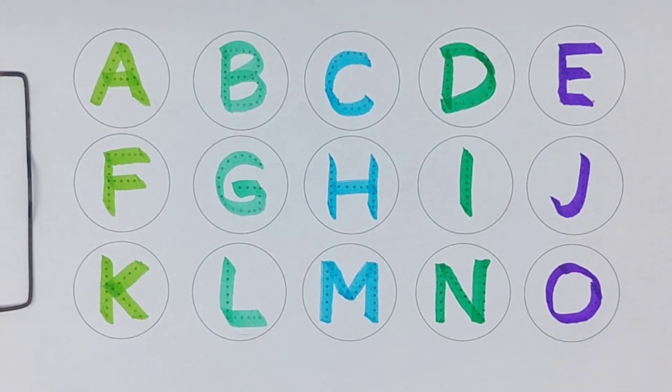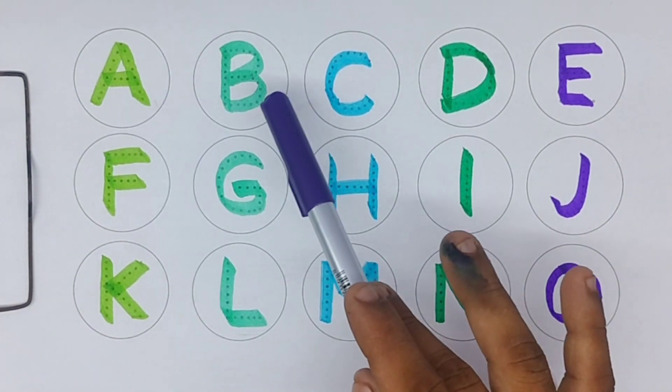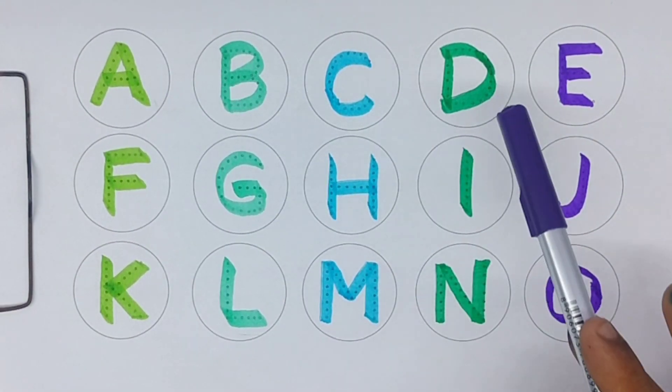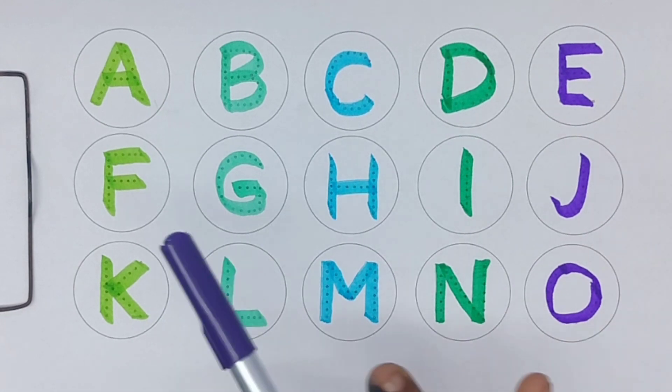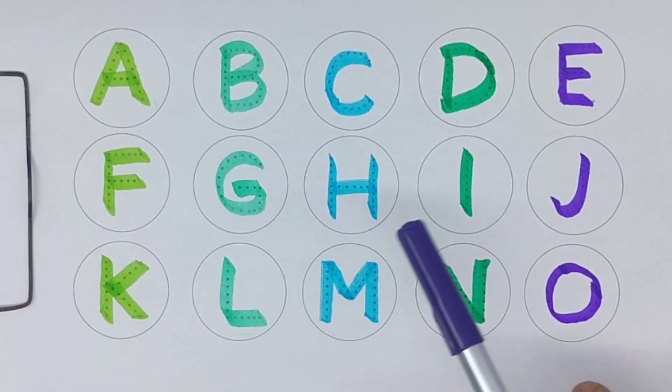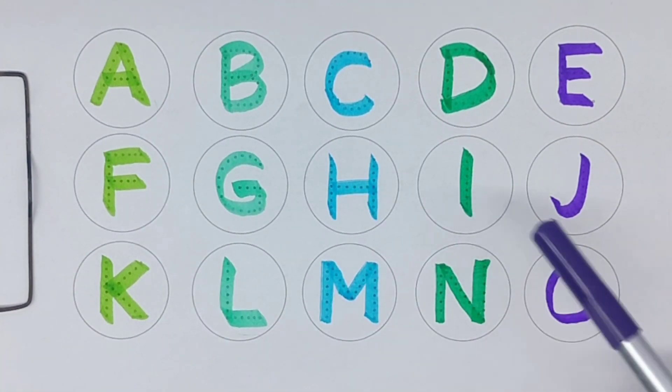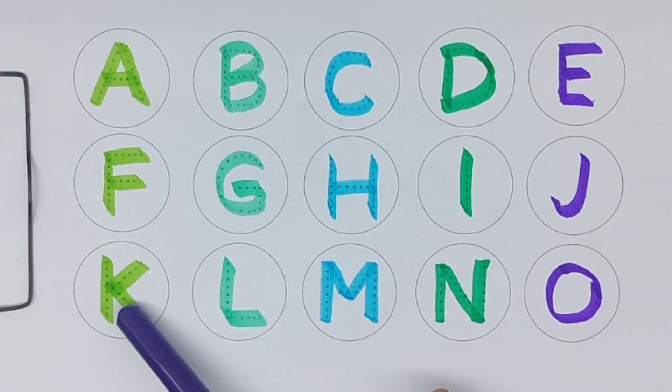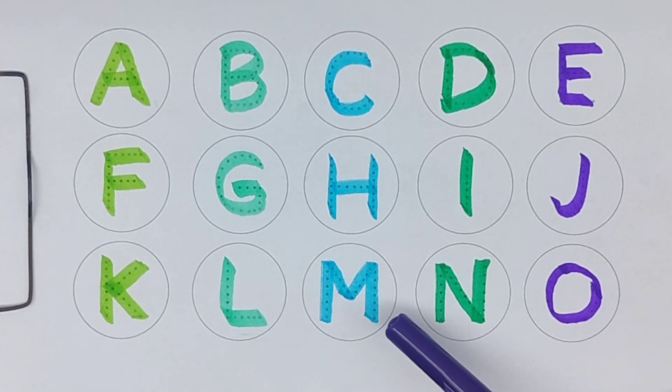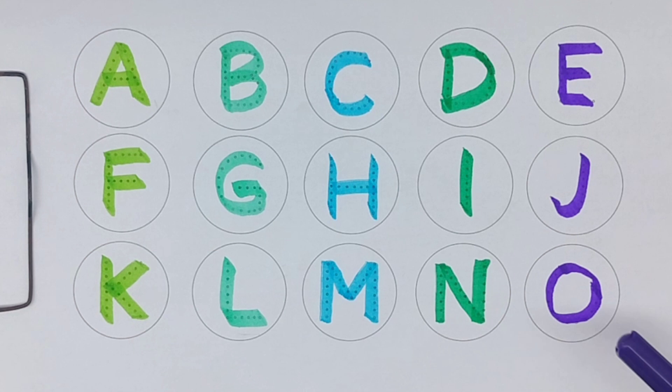Now repeat alphabet: A, B, C, D, E, F, G, H, I, J, K, L, M, N, O.